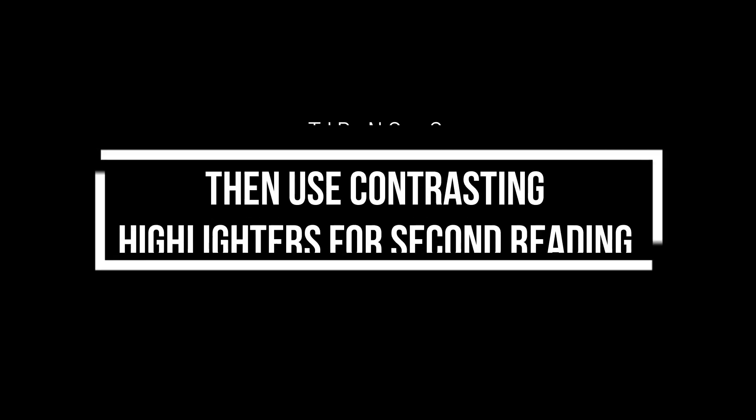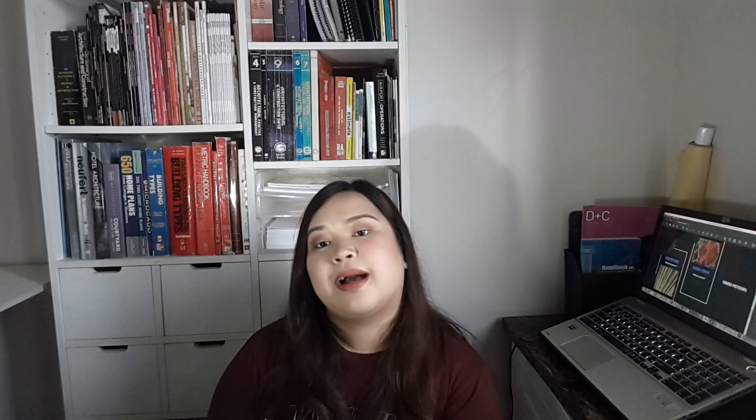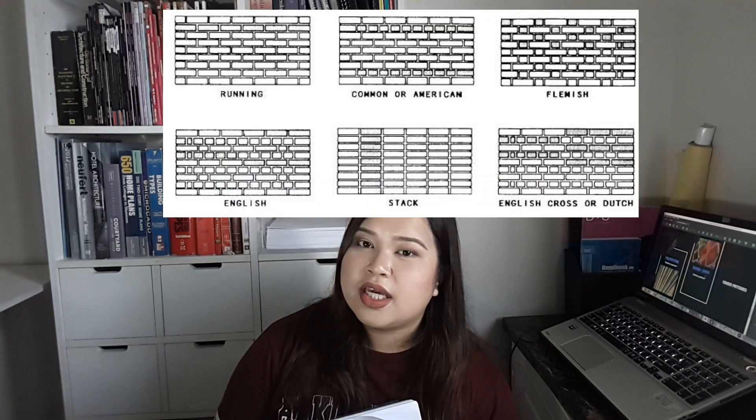Then what I would do is use two contrasting highlighters — I used yellow and orange for highlighting this book. I'd highlight after pre-reading so it becomes like a second reading. Third tip: research the images on Google. For example, if you encounter a term like waffle slab or masonry, you shouldn't just depend on the illustration in the book. You need to Google search it so you can see where it's actually applied and used.